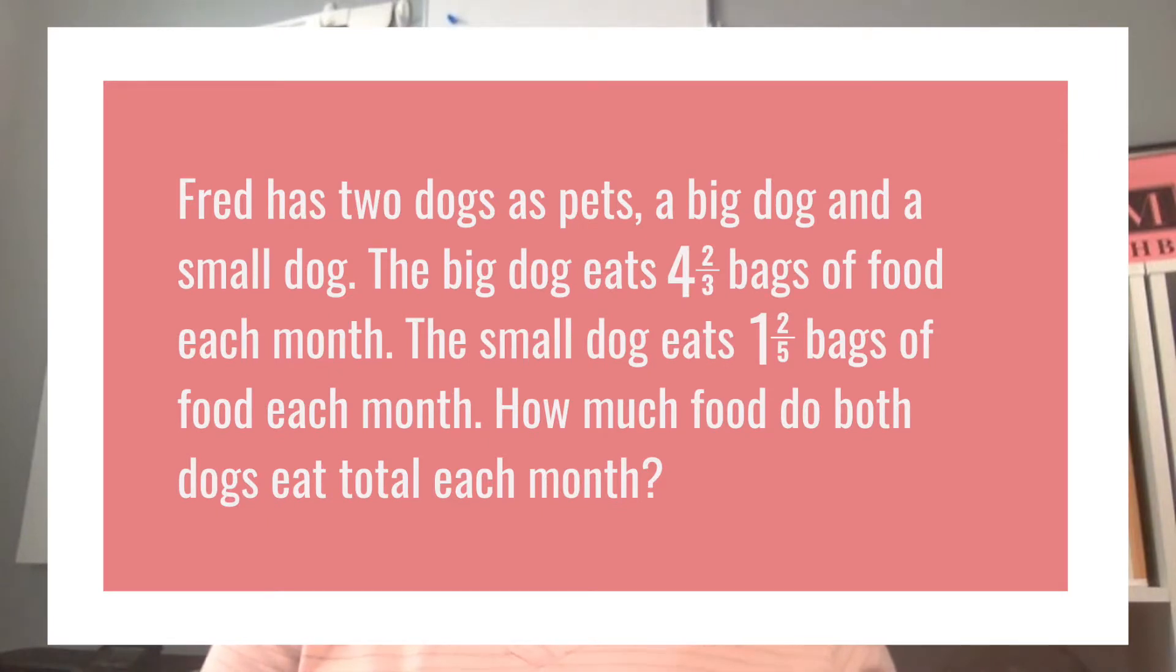Fred has two dogs as pets, a big dog and a small dog. The big dog eats 4 2/3 bags of food each month. The small dog eats 1 2/5 bags of food each month. How much food do both dogs eat total each month?